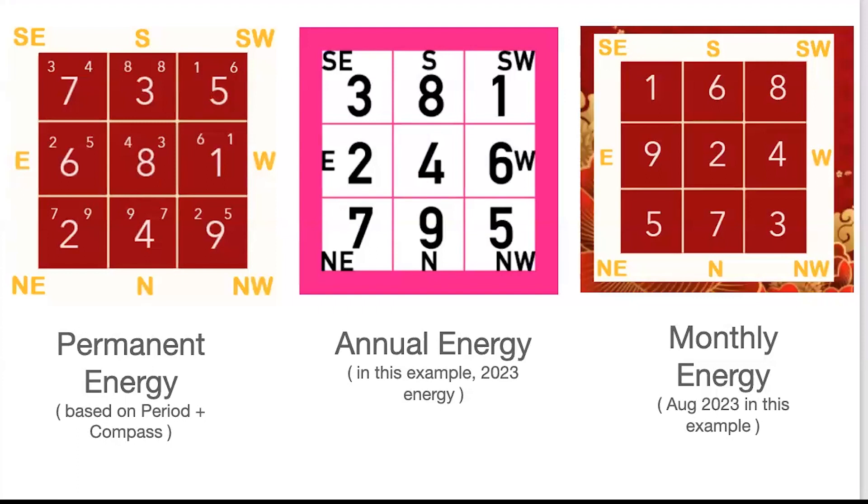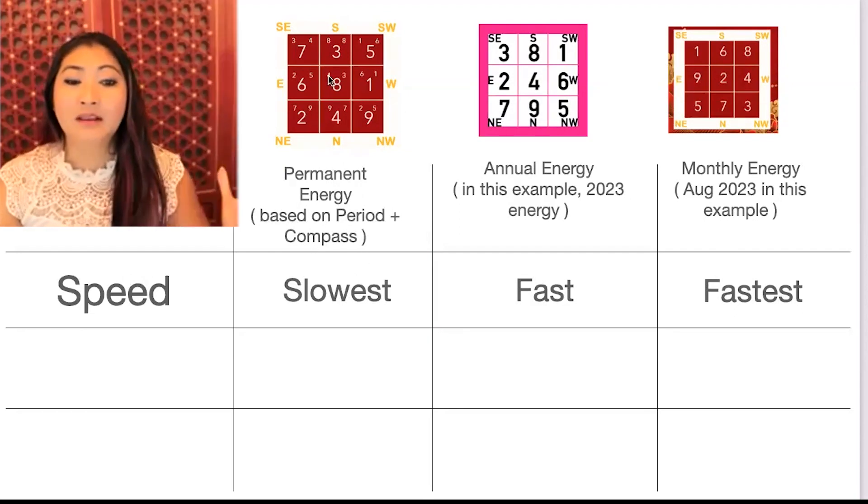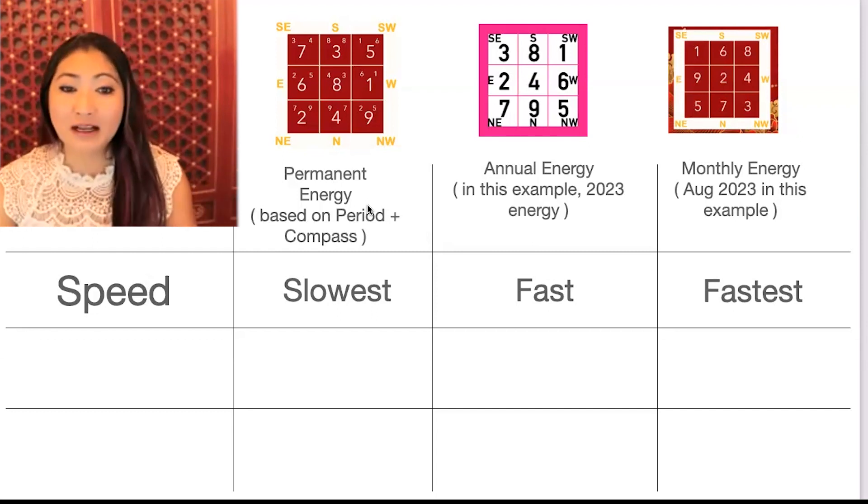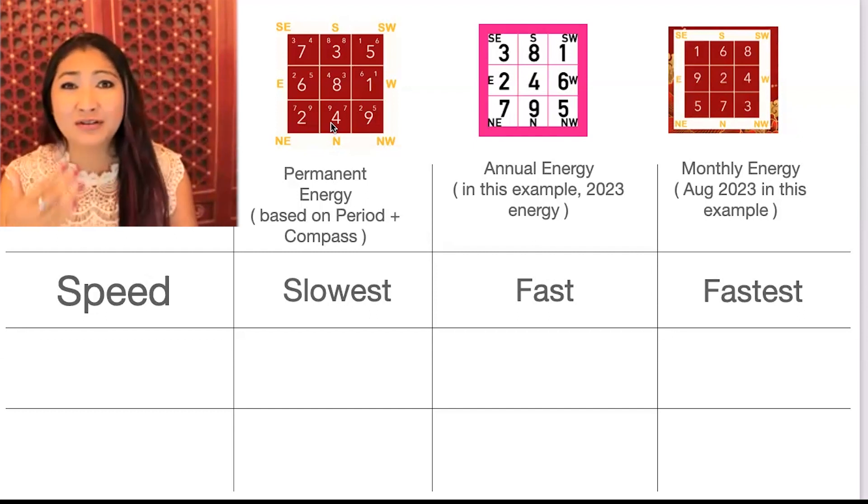So what is the difference between these three layers of feng shui? There are three things that I want to go through here. Let's talk about speed. The permanent energy works the slowest. And in my observation for most people, the permanent energy chart, whatever energy that is there, usually takes about three years to really start taking hold, especially when it comes to the negative energy.